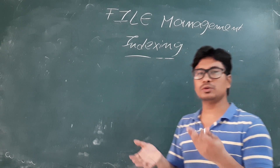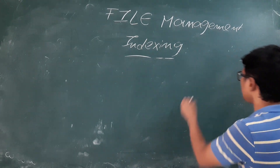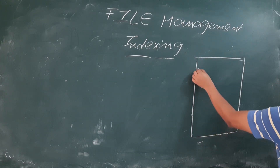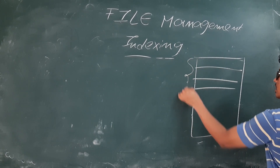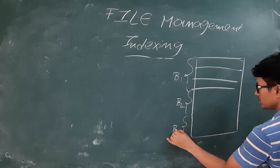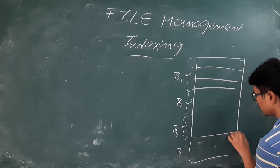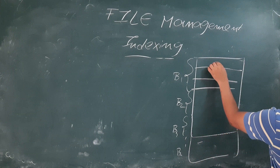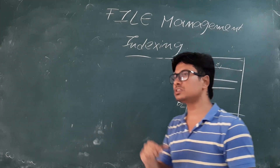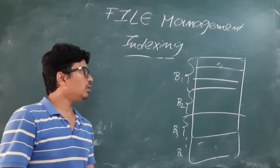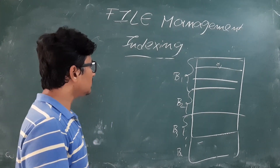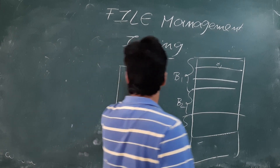Indexing is useful for searching in a better way. If I have a main file consisting of a collection of records stored in blocks — block number one, block number two, block number three, and so on — and I want to search for a particular record, I would have to access the entire file. Instead, I can create an index file.